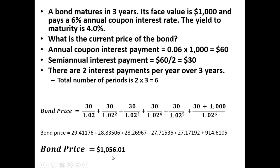This bond price exceeds the face value, and the reason is that the bond is paying an interest rate that is currently exceeding market rates for a bond of a similar type and similar risk. So the bond is selling at a premium, not at a discount, but at a premium. That's it — I hope you found this video helpful.